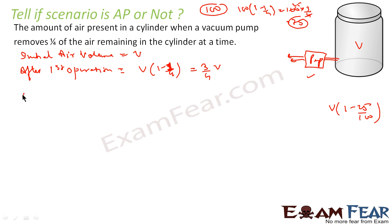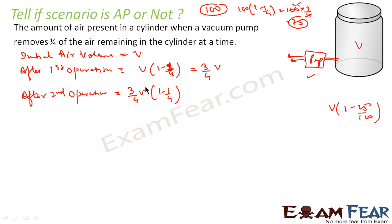After the second operation, the current volume is 3/4 V. From this volume, the pump removes 1/4th again. So it becomes 3/4 V into (1 minus 1/4) = 3/4 V into 3/4 = (3/4)² into V.